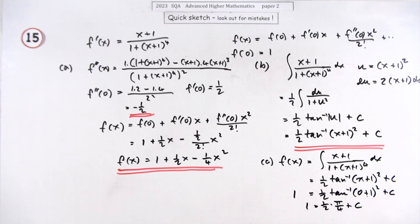I'm just running out of room a bit here, which means that C is going to be 1 - π/8. And unfortunately I've just run out of room so I'll have to pop over here to finish off.